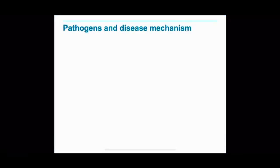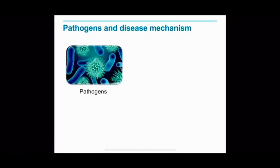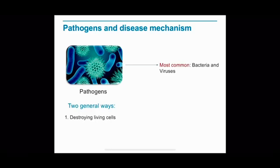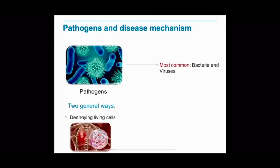The way that bacteria cause disease is by pathogens. They are disease-causing agents that can come from any taxonomic group. However, bacteria and viruses are among the most common. Bacteria are able to cause disease through two general ways. One, some bacteria destroy living cells and tissues of the infected organism directly. For example, the bacterium that causes tuberculosis — this pathogen is inhaled into the lungs, where its growth triggers an immune response that can destroy large areas of the tissue.